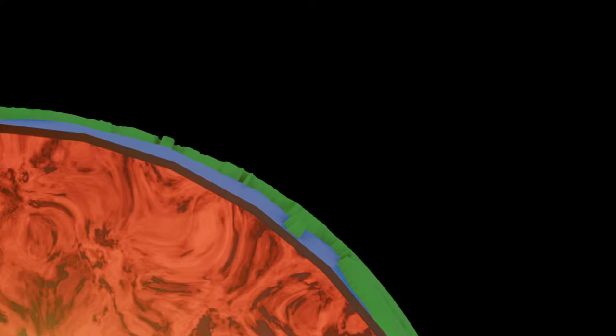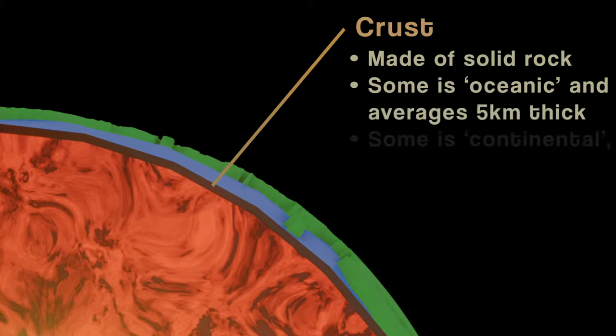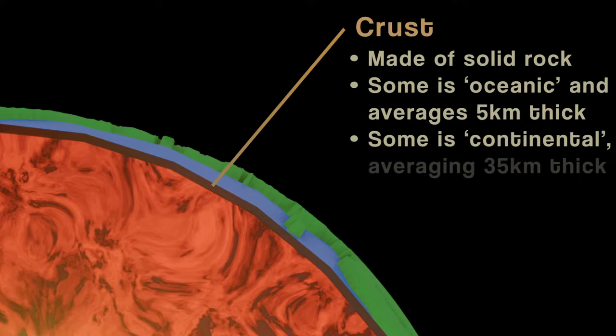This is the crust, a layer of solid rock that makes up the surface of the planet. Some of the crust, known as the oceanic crust, sits under the world's ocean and is about five kilometers thick. The other type is continental crust, named because there is no water on top of it. It's just rock all the way up to the surface and is about 35 kilometers thick on average. That might sound like a lot, but you're about to find out that it's actually extremely thin compared to the other layers.